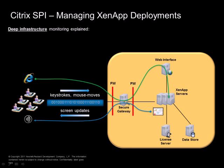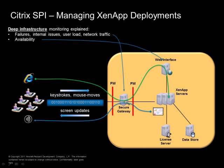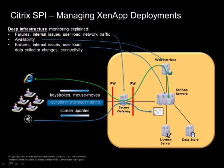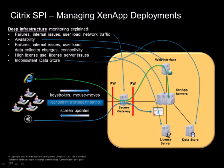The deep infrastructure monitoring of Citrix Pi reaches into every layer of the Citrix Xen App deployment. On the secure gateway level, failures, internal issues, user load and network traffic can be monitored. On the web interface level, availability can be monitored. On the Xen App servers, various failures, internal issues, user load, data collector changes and connectivity can be monitored. On the license server, high license use or license server issues can be detected. And with regards to the data store, inconsistencies can easily be uncovered.